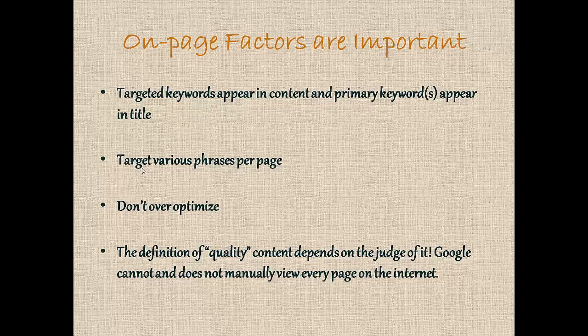If your page is about 'dog treats,' it's natural to have 'puppy treats,' 'natural puppy treats,' 'affordable puppy snacks' — different variations of that keyword. Eliminating all variations and targeting only one specific keyword looks artificial and in many cases will hurt you. Using variations keeps your page from looking artificial to Google and helps you rank for multiple keyword variations. Always do a little keyword research to find phrases that have actual search volume.